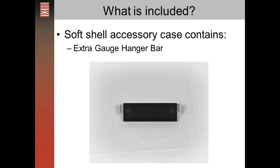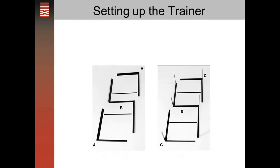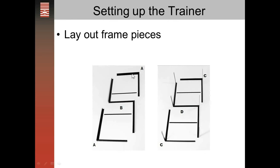Also included is an extra gauge hanger bar so you can attach both the blower door and the duct blaster gauge to the system, giving you two gauges connected to the frame. The new gauge hanger bars have a hook on both sides, making it easy to hook up to either side of the gauge without flipping it over. The first step is to take the frame pieces out of the carrying case — you'll notice they have markings on them: A, B, C, and D. The two A sides and the two C sides are identical and interchangeable.